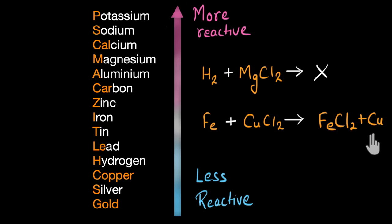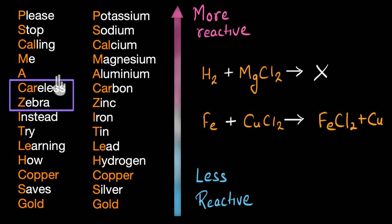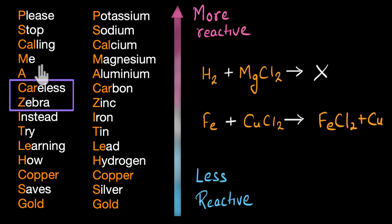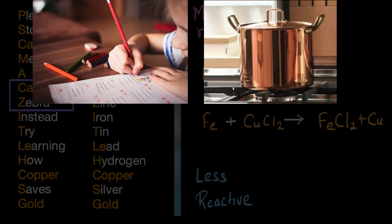How do you remember this long reactivity series? I use a mnemonic called the careless zebra mnemonic: 'Please stop calling me a careless zebra. Instead, try learning how copper saves gold.' The first letter of each word helps you remember the elements — 'P' for potassium, 'S' for sodium, and so on. Let's say it once more: 'Please stop calling me a careless zebra. Instead, try learning how copper saves gold.'